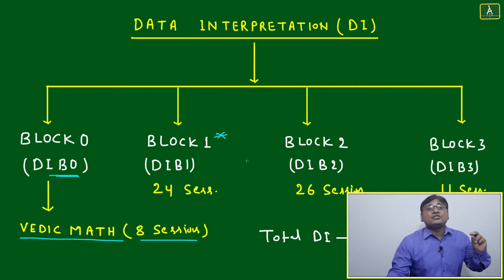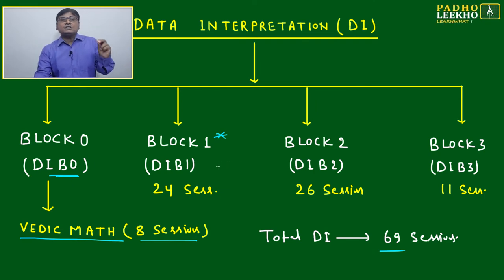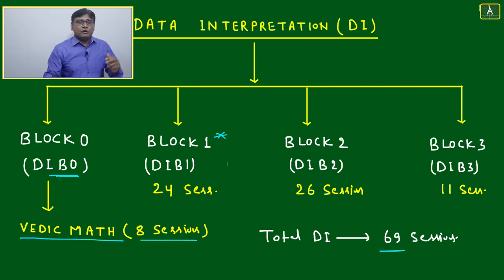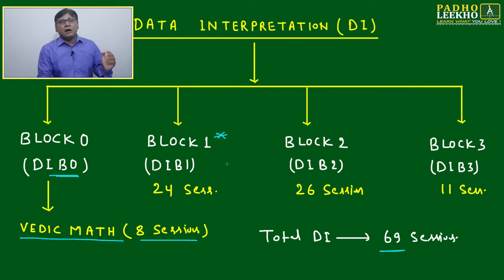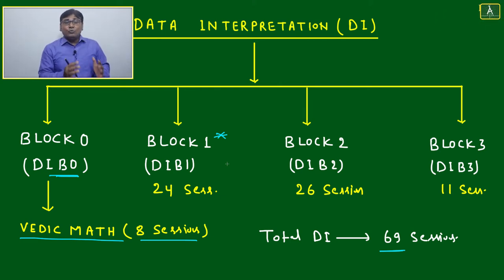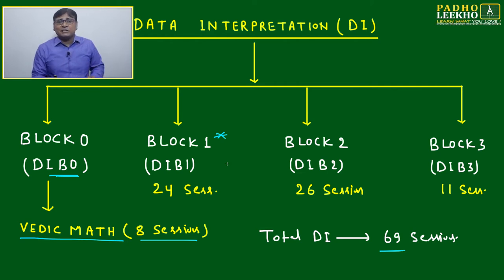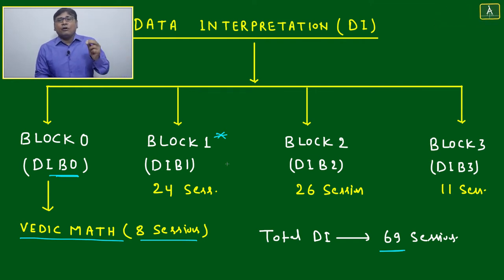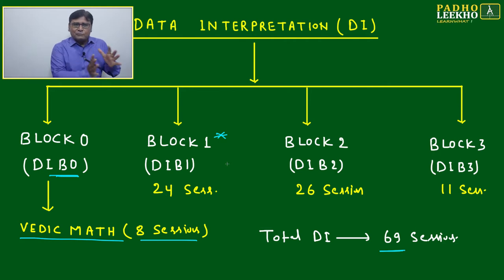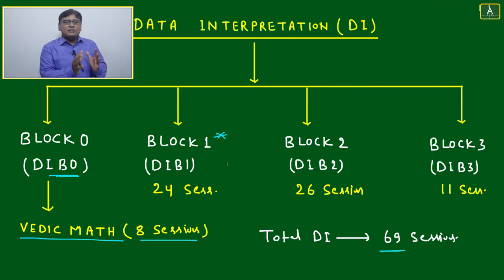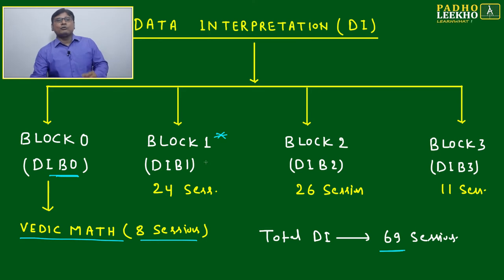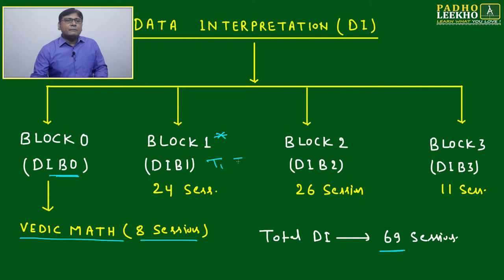Block One is much more important. I will discuss one session: the introduction to DI, and that session will be very useful for understanding complete DI. First, you have to be aware of what data is, how to convert a number into data, how to organize data, and how to make a structure of the data. Only then will you be able to make the interpretation of data. I will also discuss the purpose of asking DI in CAT, and data conversion from one format to another.